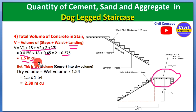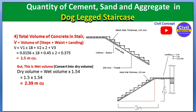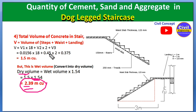We must always convert wet volume to dry volume by multiplying by a constant factor of 1.54 to 1.57 — this accounts for the 54% to 57% extra volume needed in dry state. Multiplying 1.5 m³ by 1.54 gives a dry volume of approximately 2.39 m³.